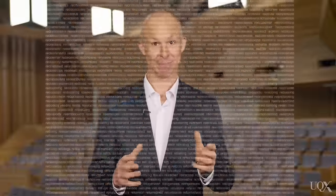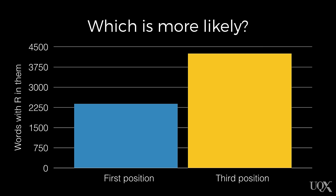In fact, there are 2,386 words with R in the first position. But there are even more with it in the third position — 4,247 to be precise. So nearly twice as many words have R in the third position.